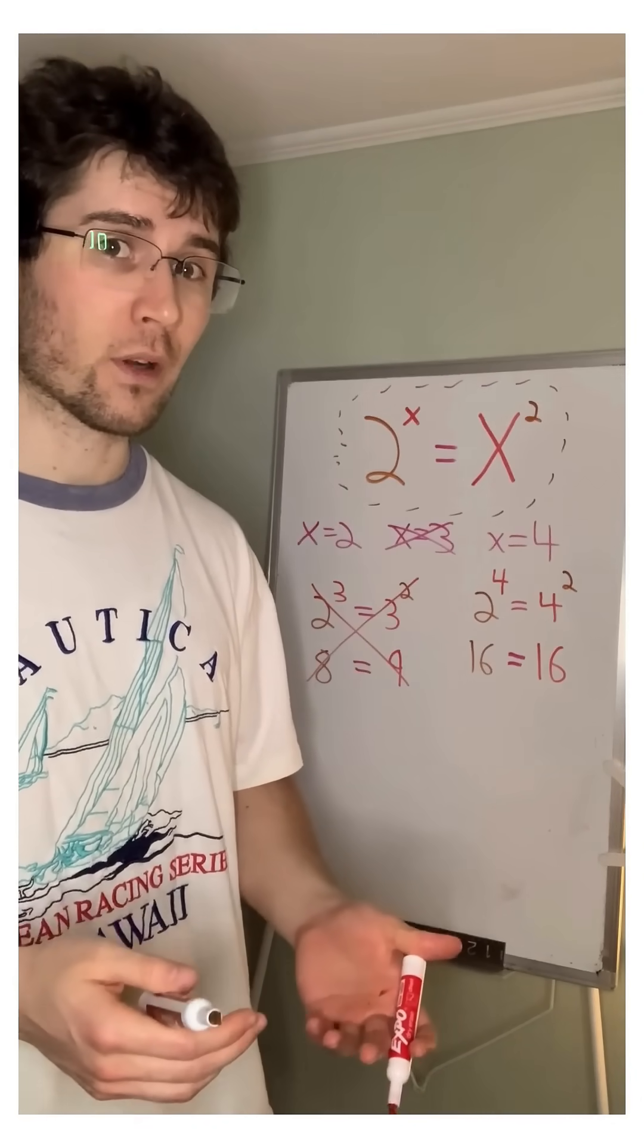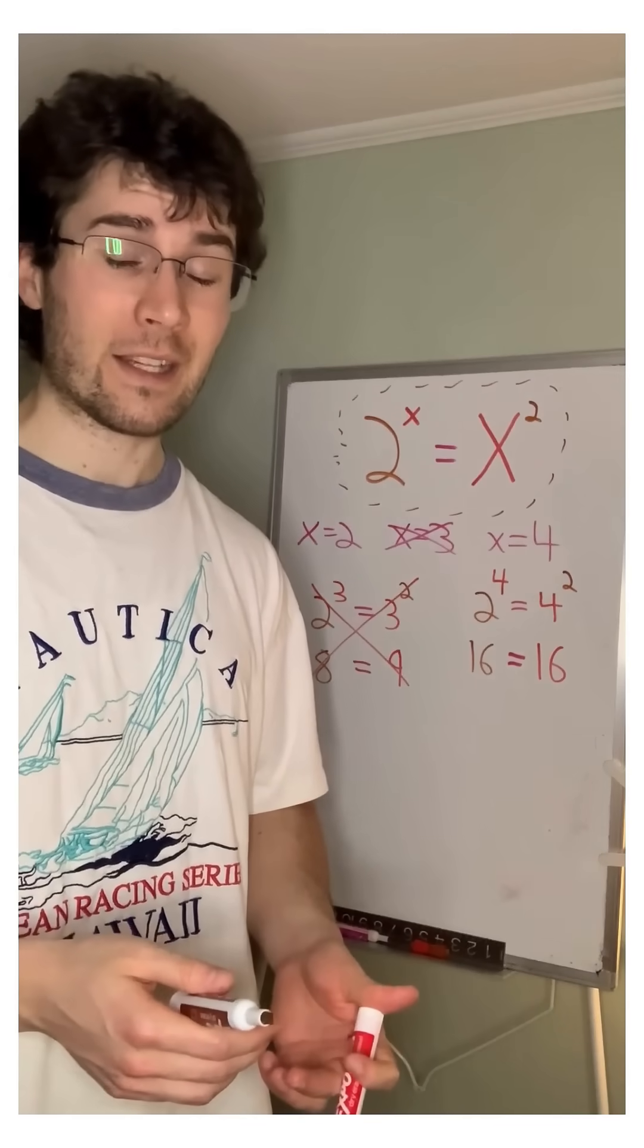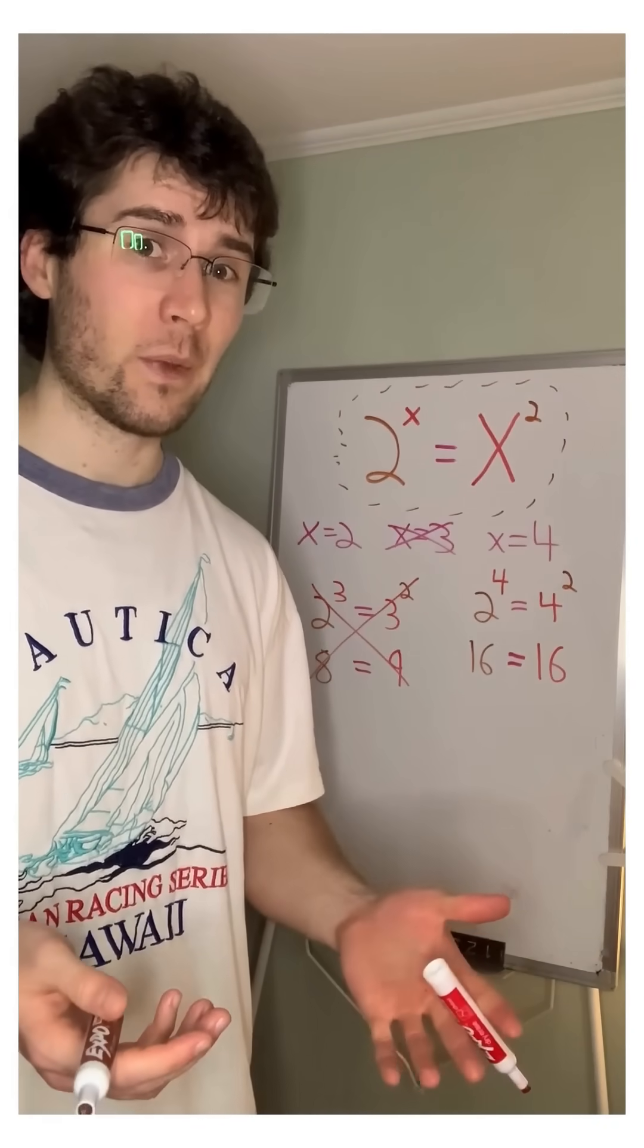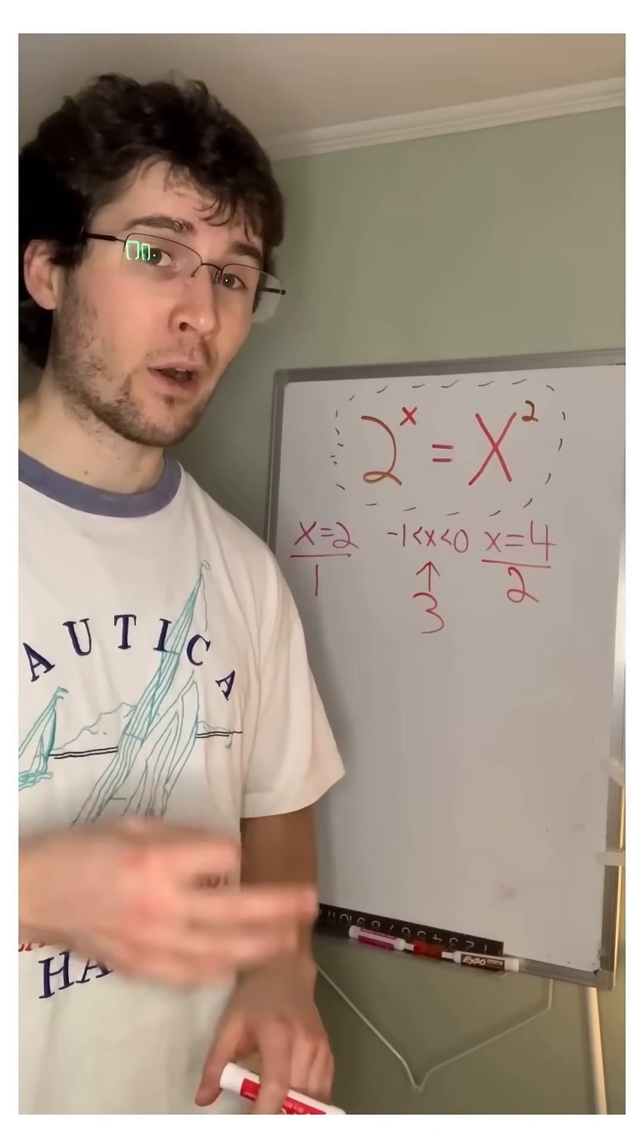Although x equaling 3 doesn't work because 2 cubed doesn't equal 3 squared, if we set x equal to 4, it will work because 2 to the fourth power does equal 4 squared. It turns out there are three solutions.